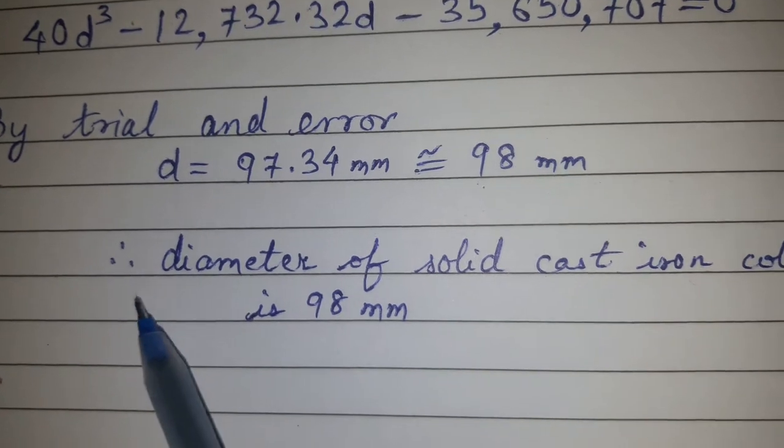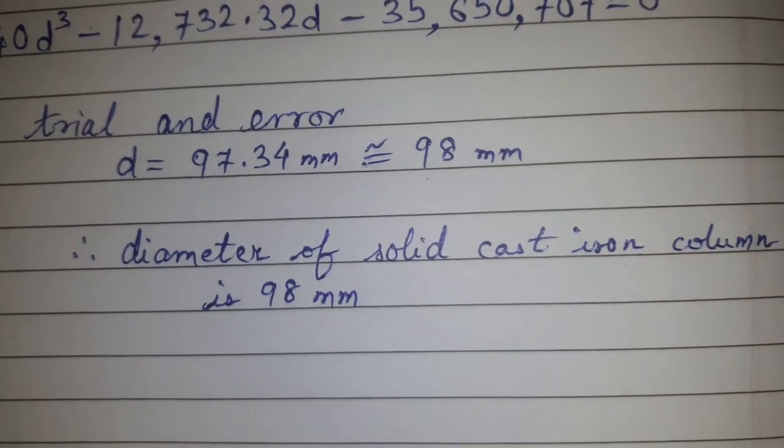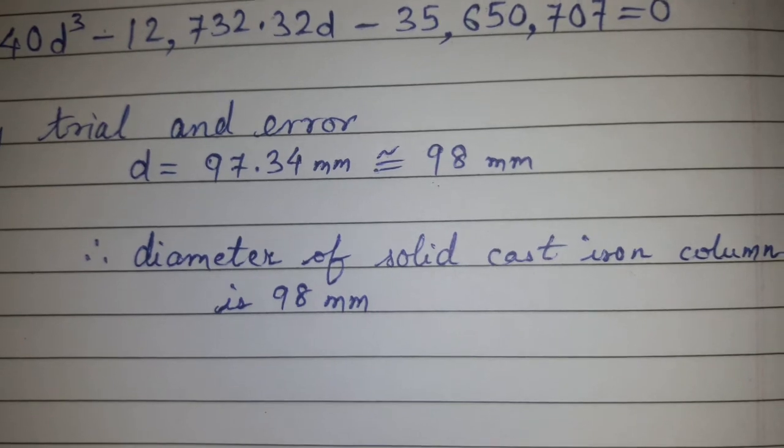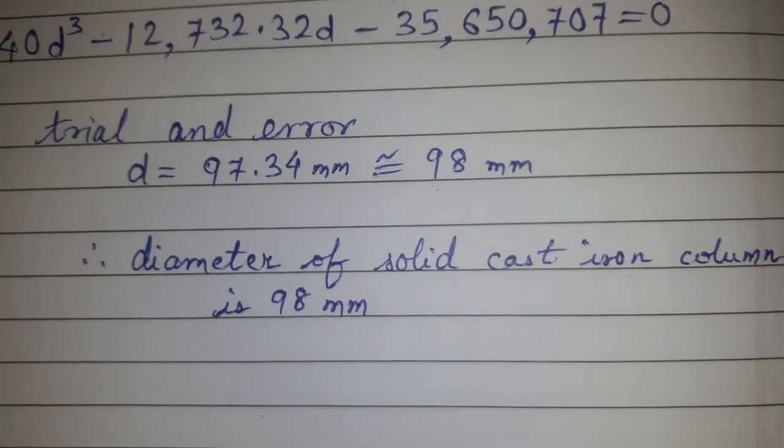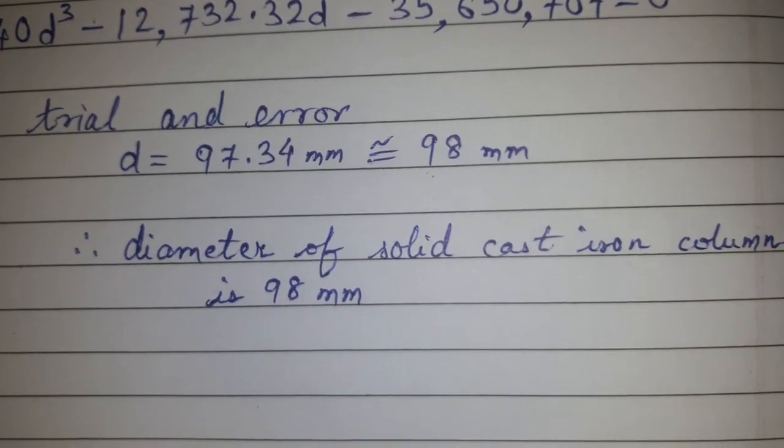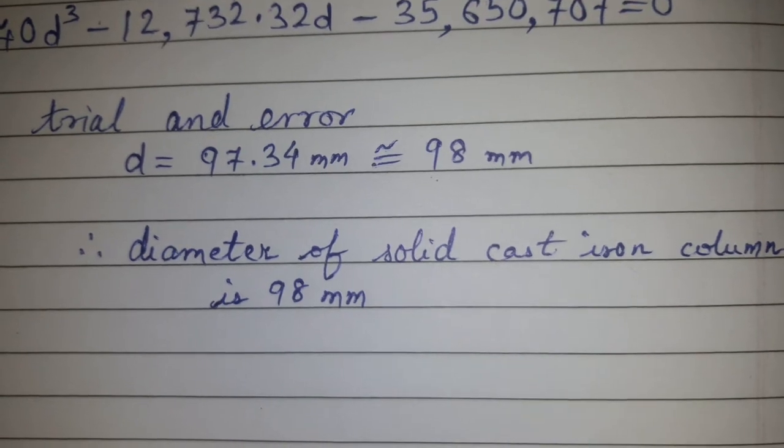Therefore, the diameter of the solid cast iron column is 98 mm when the permissible tensile stress is 40 N/mm².